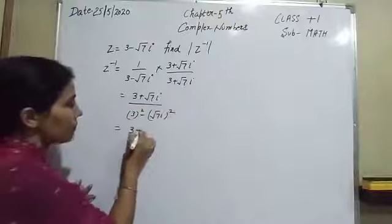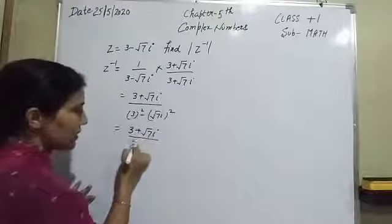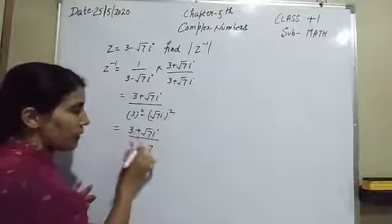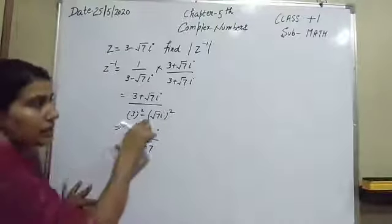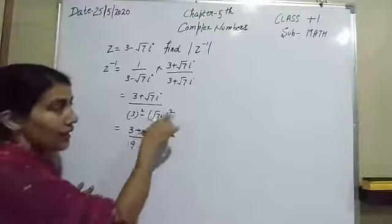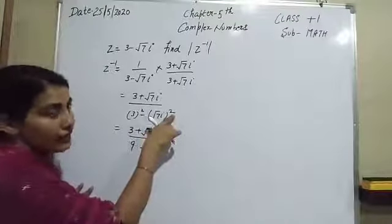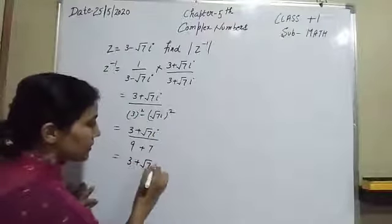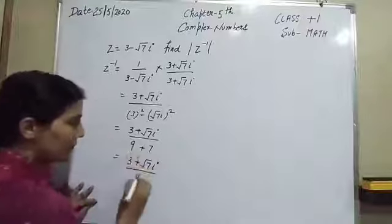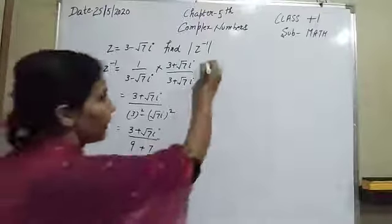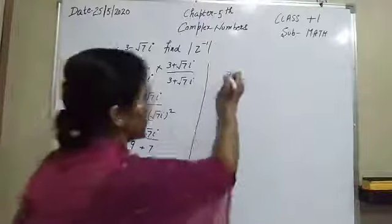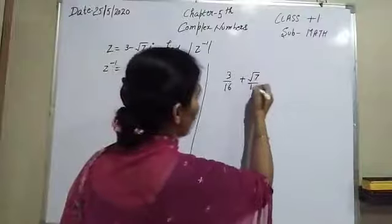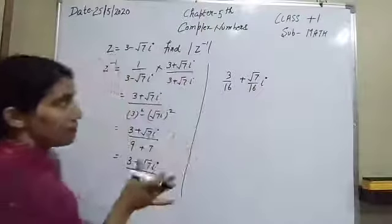So we have 3 plus root 7 eta over: 3 squared is 9, root 7 squared is 7, and eta squared is minus 1, so minus minus gives plus 7. So 9 plus 7 is 16. Therefore z inverse equals 3 over 16 plus root 7 over 16 eta. That is our complex number.